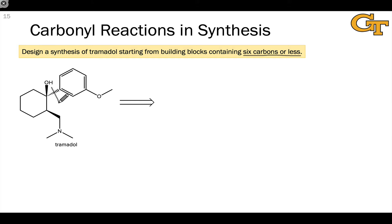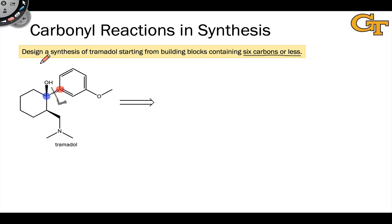We avoid breaking open rings if at all possible when planning syntheses. So let's think about the starting materials that could be used to form this compound through addition of some aromatic nucleophile to a carbonyl. Put another way, we want this carbon to be electrophilic in the starting materials and this carbon to be nucleophilic. Mechanistically, we can imagine pushing this bond toward this carbon to generate a nucleophile on the carbon highlighted in red and an electrophile on the carbon highlighted in blue.